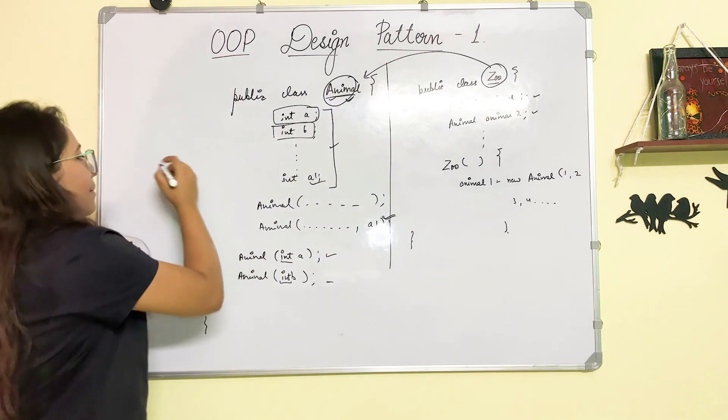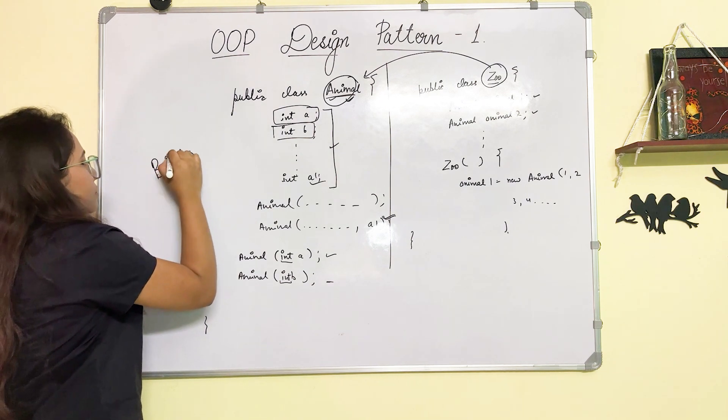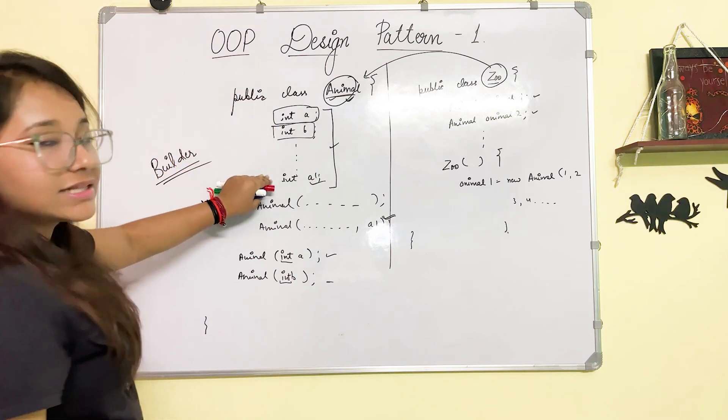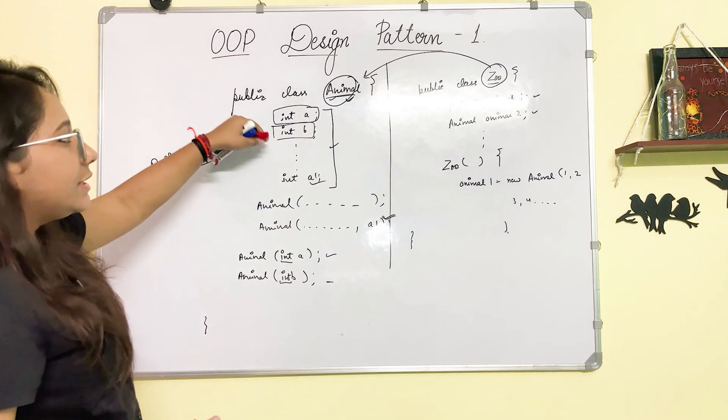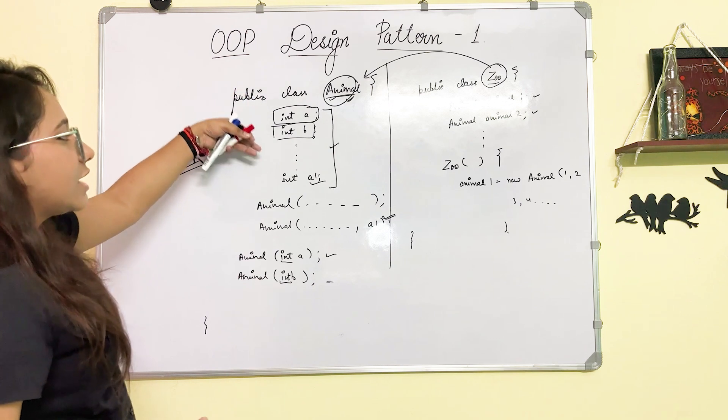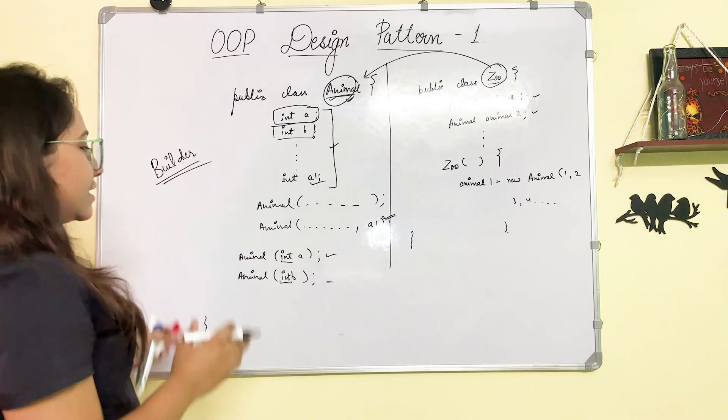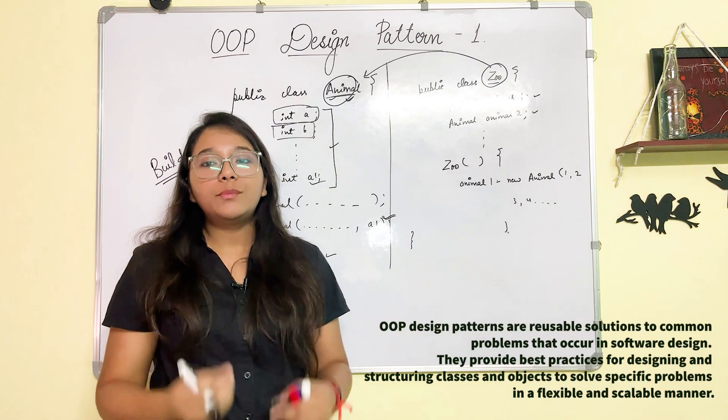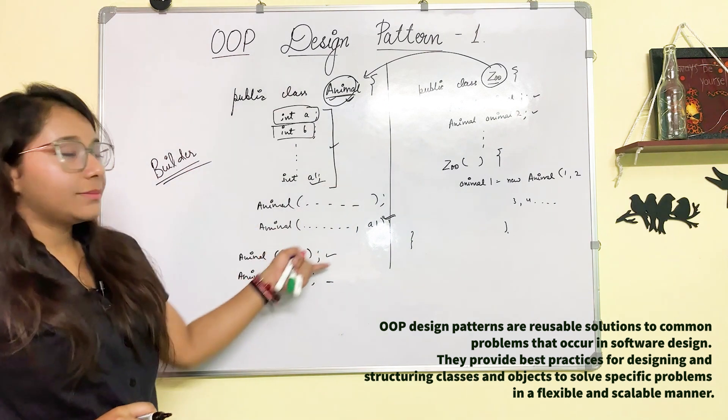To solve this, we have a pattern called Builder Pattern. What happens if you have a lot of class members and you have a situation where you don't need to initialize each and every class member? Then you use this kind of pattern. So basically, what happens in design patterns? Design patterns are the common solutions to the problems that we face while writing our code. Like this was the problem.